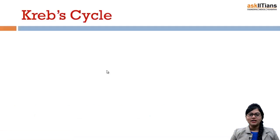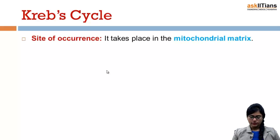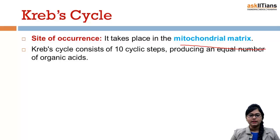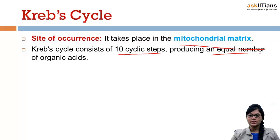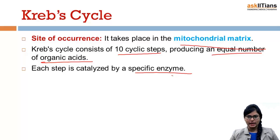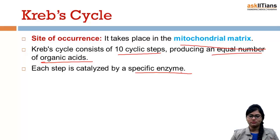Krebs cycle — the site of occurrence is the mitochondrial matrix. The Krebs cycle consists of 10 cyclic steps, producing an equal number of organic acids. Each step is catalyzed by a specific enzyme, just as you saw in the previous glycolysis pathway where specific enzymes were used for each step.